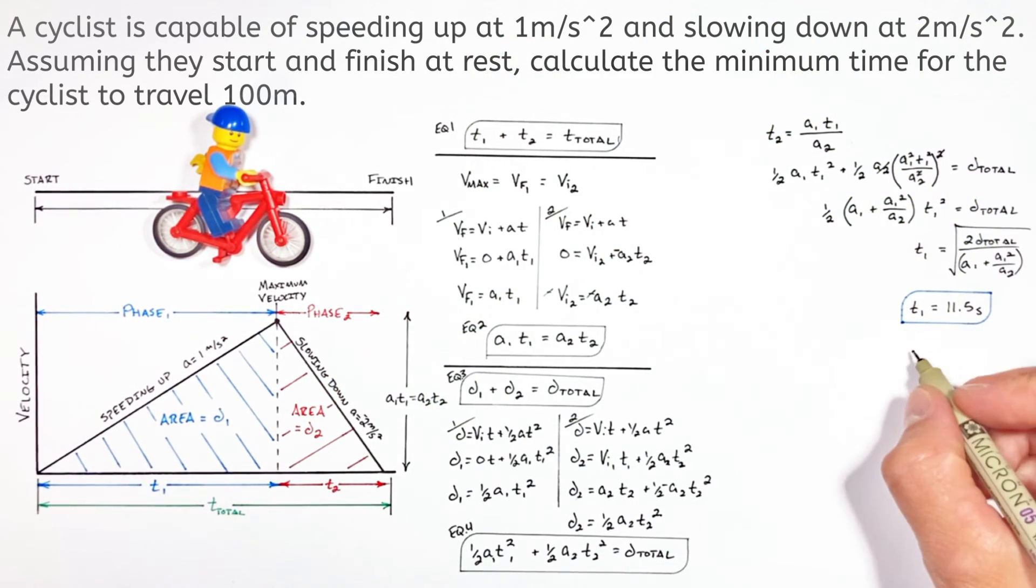And plugging that time back into equation two, we can now solve for time two, which we find is 5.77 seconds.